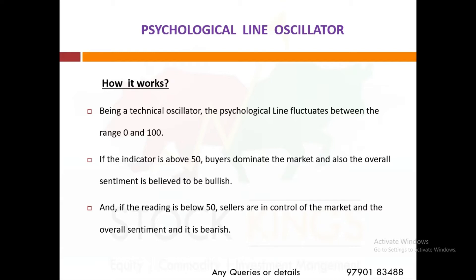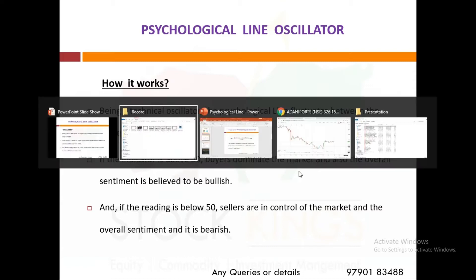If the indicator is above 50, it signals domination by buyers. If it is below 50 — especially below 40 — then it is a clear sell signal indicating a selling trend.